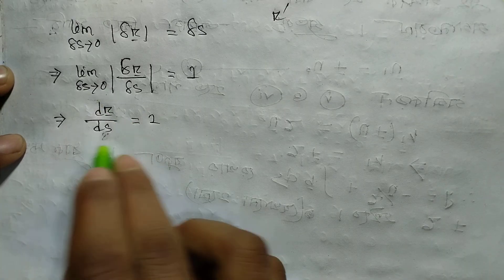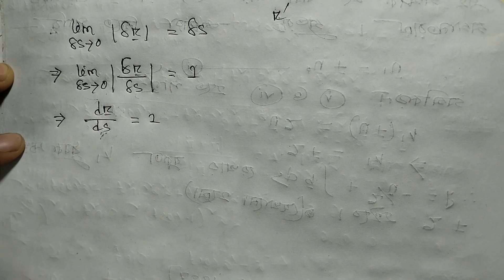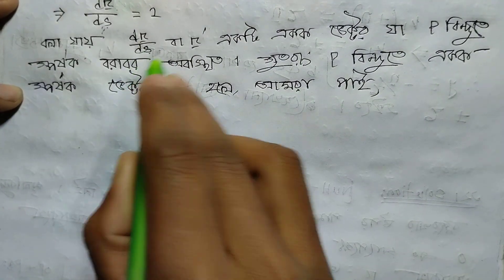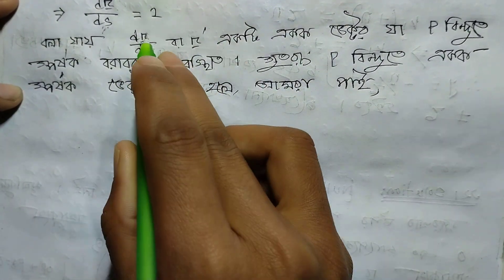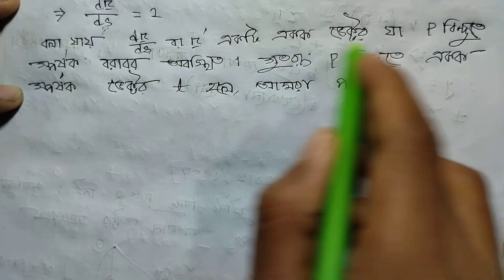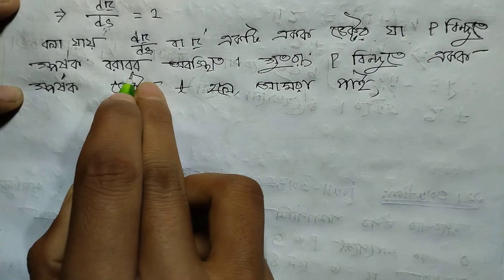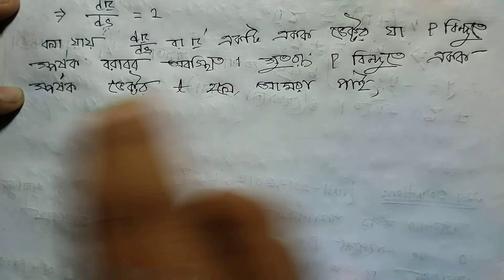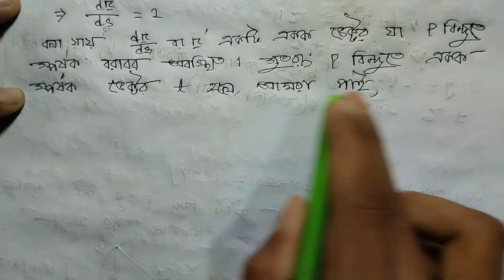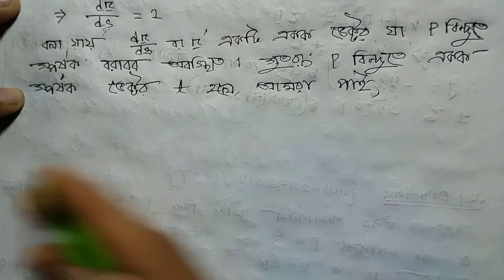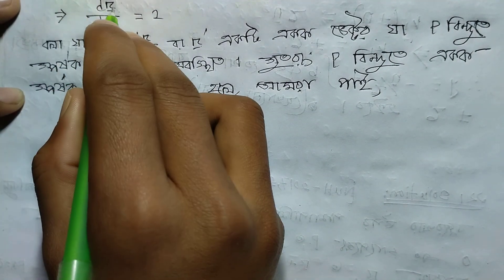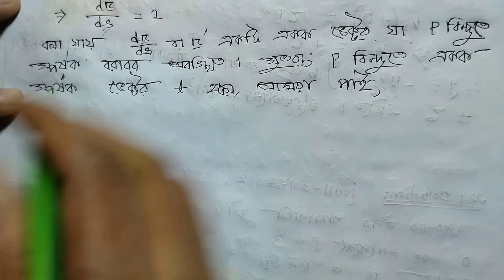So r prime vector — okay, the result is that dr by ds bar — r prime vector — that is set at a point s. At point P, as s increases, the tangent vector t is obtained. At point P, the arc length parameter s gives a vector t — the unit tangent vector.